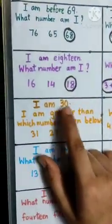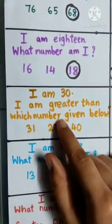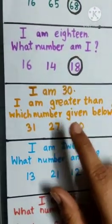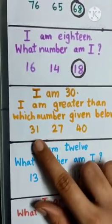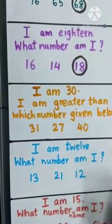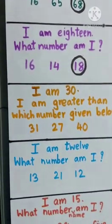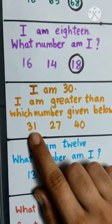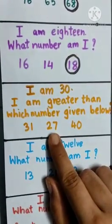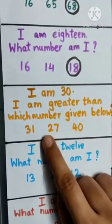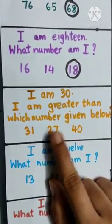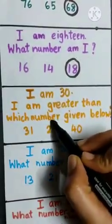I am 30. I am greater than which number given below. The number is 30, and it is asking us which number 30 is greater than. 31 comes after 30, so it can't be greater. 27 and 40. Which one of these two numbers is smaller than 30? It is 27. So, let us circle it.